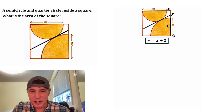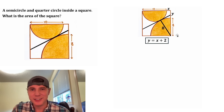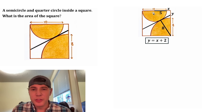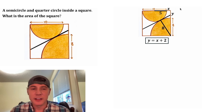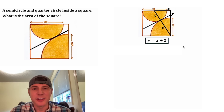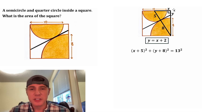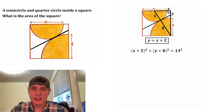Next, let's focus on this radius right here, which we know is equal to 8, and let's pivot it over here to this point of tangency. And we also know this radius is equal to 5, and let's pivot it over here to this point of tangency. And then let's complete this right triangle. We can now do the Pythagorean theorem: the quantity x plus 5 squared plus the quantity y plus 8 squared is equal to 13 squared.